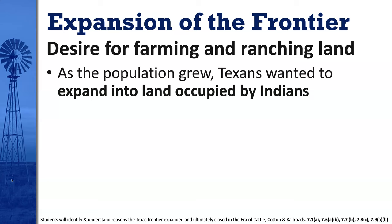The first thing we're going to talk about is the expansion of the frontier — how as more and more people moved in, the edge of that frontier moved further and further west. The major cause for the expansion of the frontier was a desire for farming and ranching land. As the population of Texas grew, Texans wanted to expand into land occupied by Native Americans.